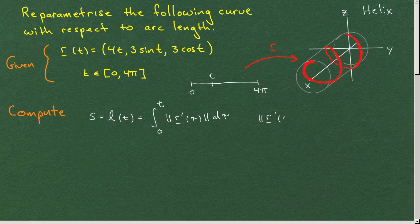r prime at a point, let's call it t here, will be equal to, the derivative of this is 4 squared is 16 plus 9 cosine squared t plus the derivative of this is minus 3 sine. So that's 9 sine squared t to the 1 half. And that's simply equal to 5.